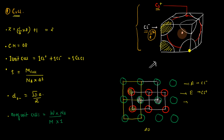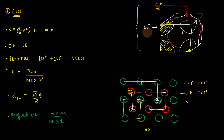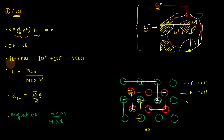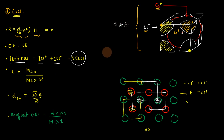Any ion present at the vertex or corner of a cube contributes one-eighth part; any ion at the edge contributes one-fourth part; any ion in the body cavity contributes one whole part. Since we are considering chloride ions forming the simple cubic unit cell, the contribution is 1/8 × 8 = 1 chloride ion. Plus one cesium⁺ ion is entirely present inside the body cavity. So one unit cell of cesium chloride has one Cs⁺ and one Cl⁻, meaning one cesium chloride molecule per unit cell.